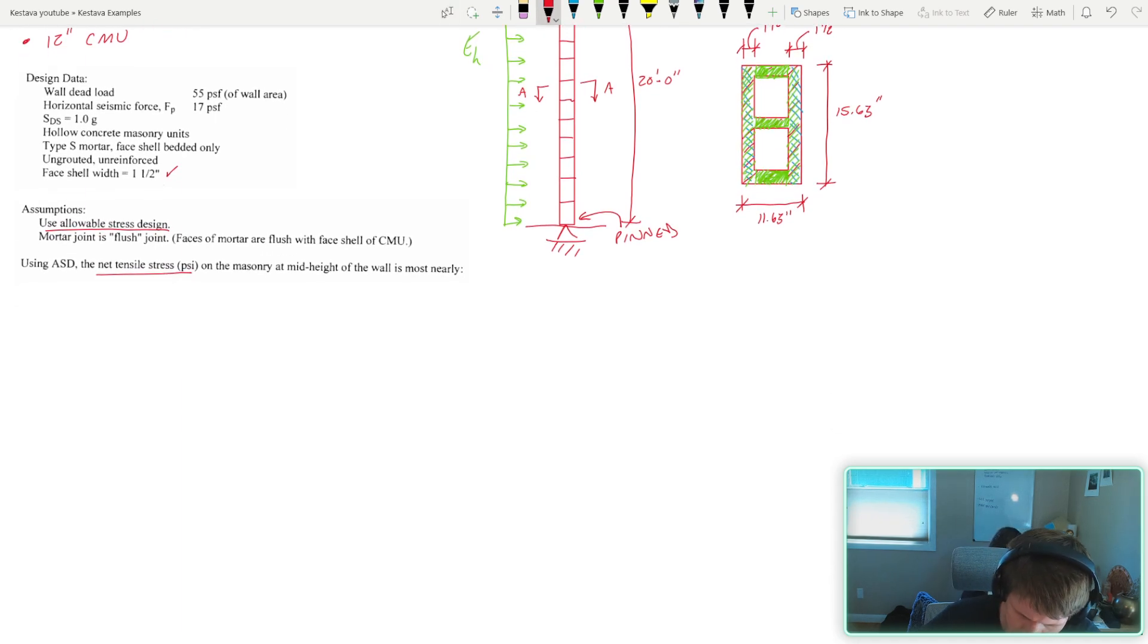First off, we're designing using the ASCE-7, so we need to get our load criteria into proper load combinations. For today's example, we have seismic design. So we have two load combinations, one of them including a heavier dead load in combination with your seismic effects, and then one of them including a lighter dead load in combination with your seismic effects. Because we are looking for the highest tensile stress on this wall, that means we are going to want to use the load combination with a lower dead load.